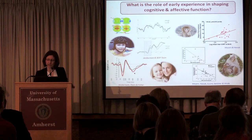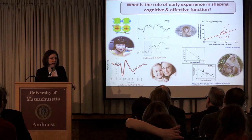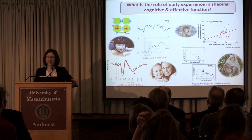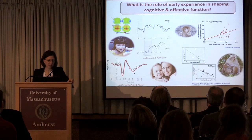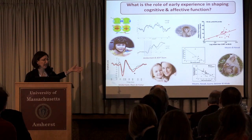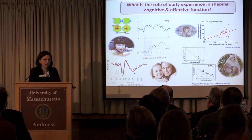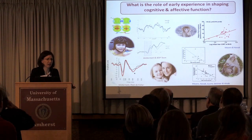The first question I want to tackle is: what is the role of early experience in shaping cognitive and affective function? The right half of the slide is human work and the left half is animal work. We know from previous work that deprived caregiving environments are not optimal for the developing brain. We get EEG and ERP measures of how children are processing different tasks, and they are not functioning up to par with peers when they've had a poor early caregiving environment.